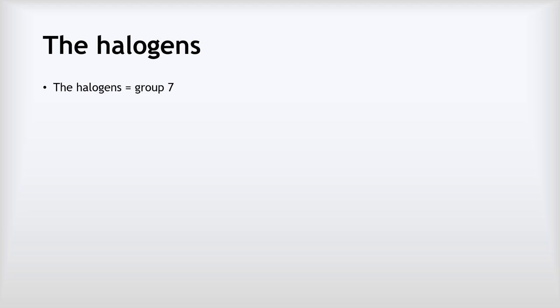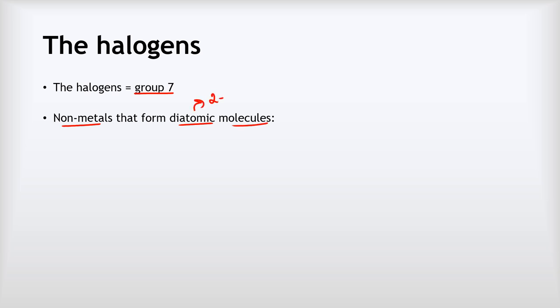So what are the halogens? The halogens are the elements in group seven of the periodic table — that is fluorine, chlorine, bromine and iodine. Now these are all non-metals that form diatomic molecules. Diatomic just means a two-atom molecule. So our first one, for example, is fluorine which has F2 molecules made of two fluorine atoms.